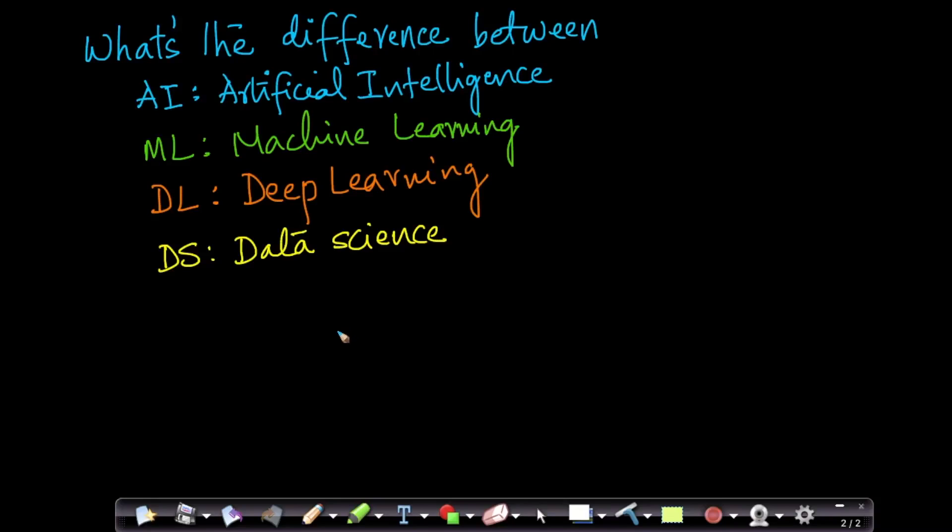One of the big confusions for many of our potential students is what is the difference between artificial intelligence, machine learning, deep learning, and data science. As these terms are maturing today, some of the definitions are not still concrete and there's a lot of media hype where people use these terms interchangeably. So we wanted to clarify and throw some light on what is the difference between some of these terms.